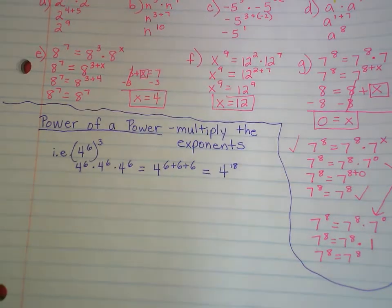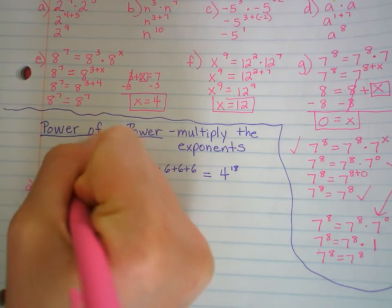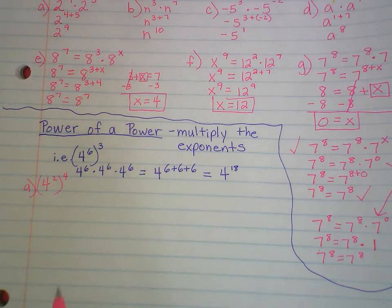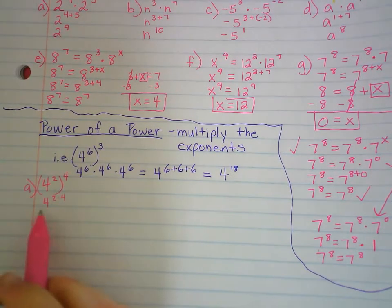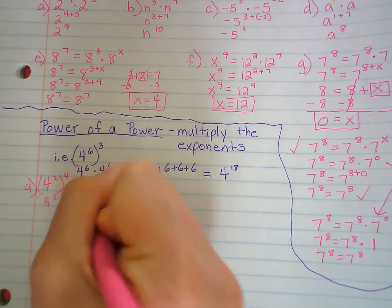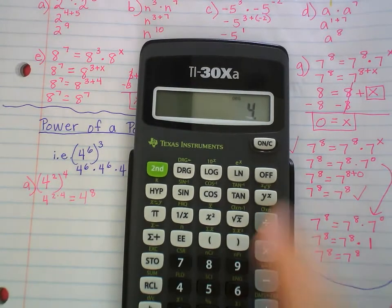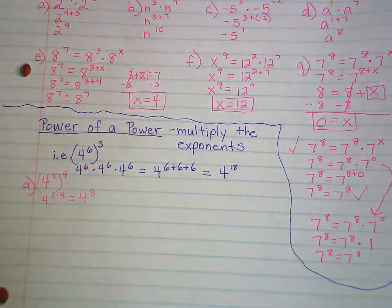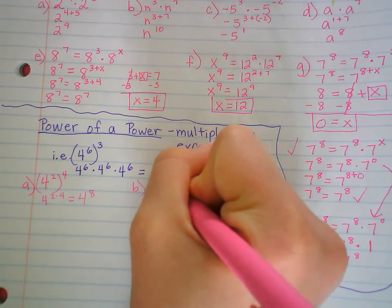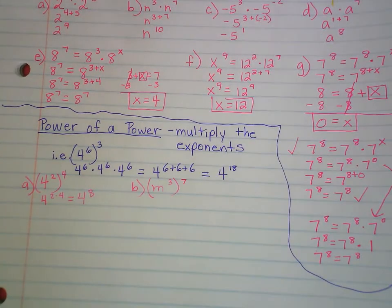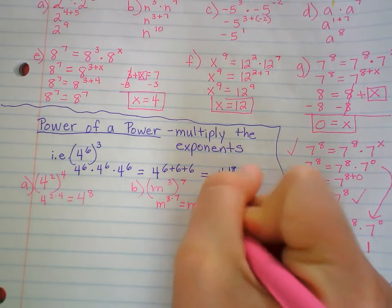So if we had 4 to the 2nd to the 4th — they don't have the same base — that's 4 to the 2nd times itself four times. So you multiply the exponents: 4 to the 2 times 4, which is 4 to the 8th. Let's say we have a variable: M to the 3rd to the 7th power. So M to the 3 times 7 equals M to the 21st power.